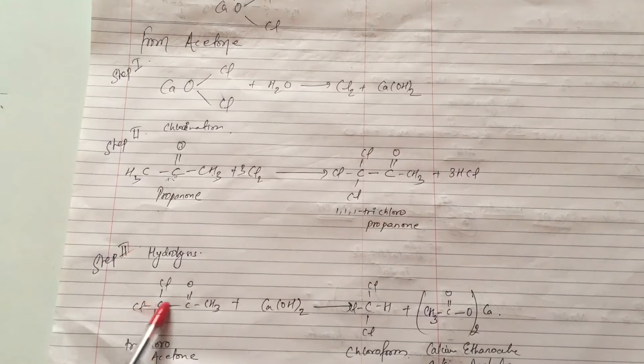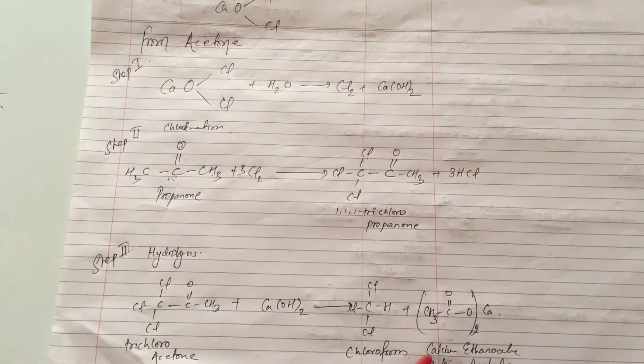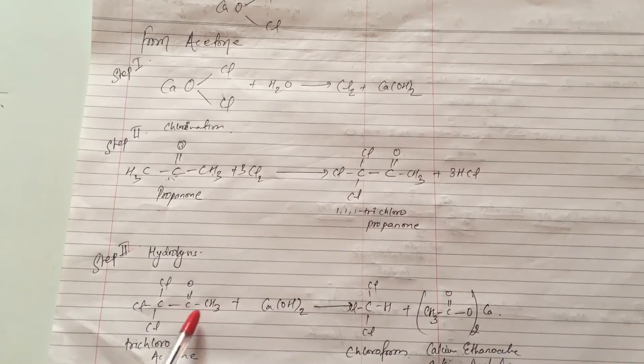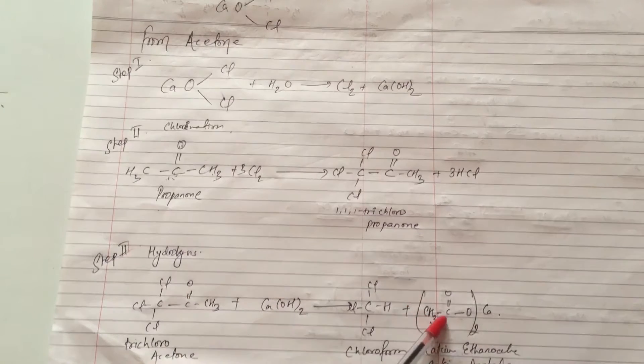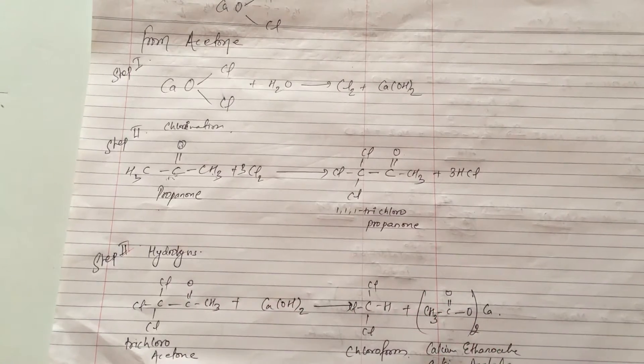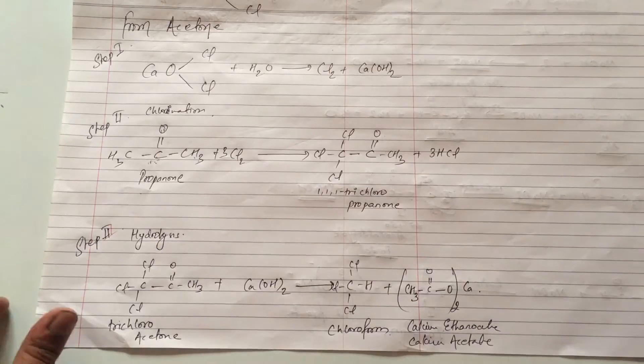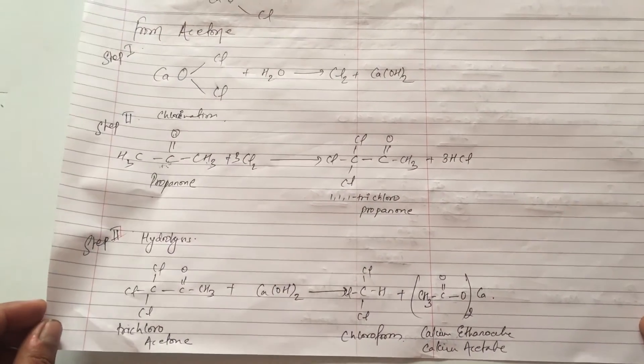Ultimately this is CHCl3 placed in this part. Ultimately calcium ethanoate CH3COO forms. So in this way we can easily prepare chloroform from acetone or from ethanol.